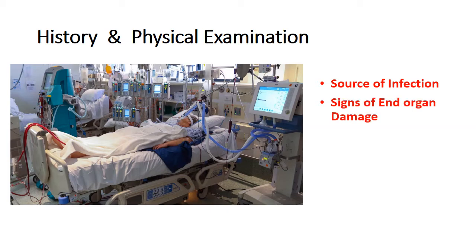Another thing to look for is signs of end-organ damage, like acute kidney injury, pulmonary failure, or others. We are looking for creatinine — is it elevated or not? We are looking for BUN. We are looking for urine output — is it decreased? We are looking for mental status changes. And we are looking for decreased platelets, decreased oxygen saturations, or elevated bilirubin. All of these may be signs of end-organ damage.